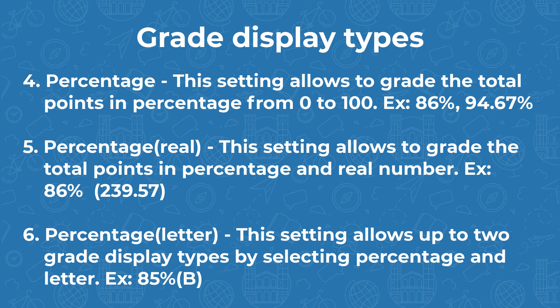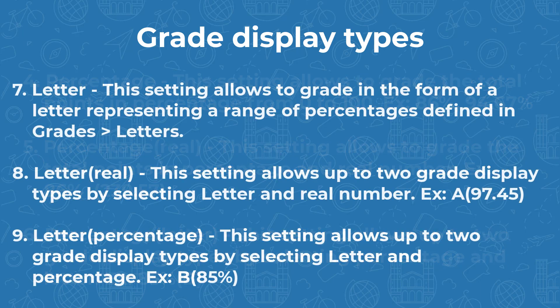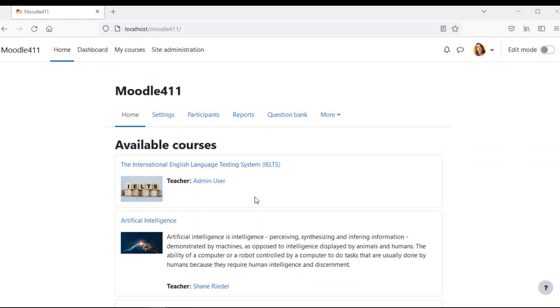Letter: grades in the form of a letter representing a range of percentages defined in grade letters. Letter with Real: displays up to two grade types — letter and real number, example A 97.45. Letter with Percentage: displays up to two grade display types — letter and percentage, example B 85%. Let us implement the gradebook in Moodle.